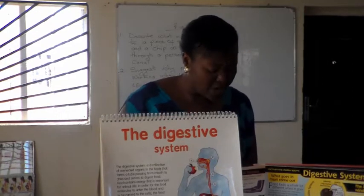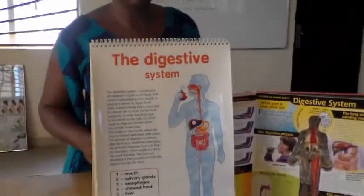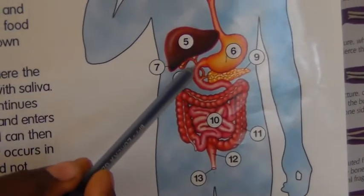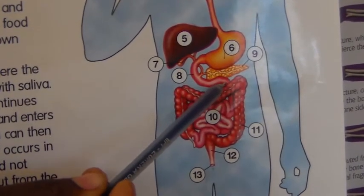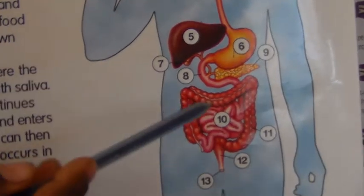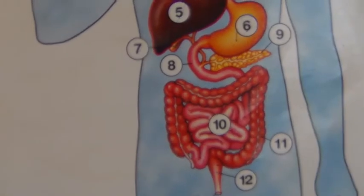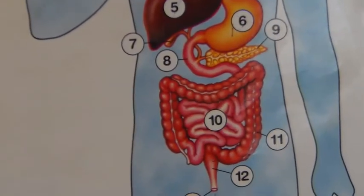Which parts make up the small intestine? The small intestine is made up of the duodenum, the jejunum, and the ileum. The duodenum comes first, followed by the jejunum, and the latter part is the ileum. Food goes into the duodenum first before passing to the jejunum and then to the ileum.